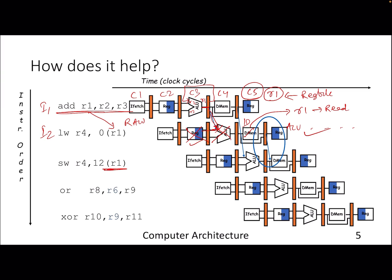A similar case arises with a store instruction — storing the content of R4 into a memory address — where a preceding instruction has written R4. You can again use the new bypass data path: the output of the memory stage is connected to the input. This is how we can mitigate stalls caused by data hazards using forwarding.